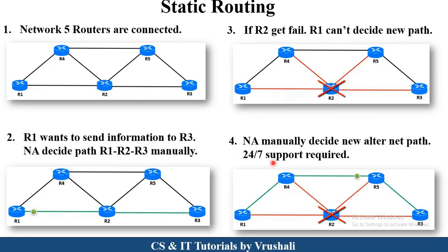So in static routing, finding a particular path is done manually by the network administrator. That's why 24/7 support is required and it is a very time-consuming process. This is called static routing — the network administrator manually decides the path and stores it into the routing table.